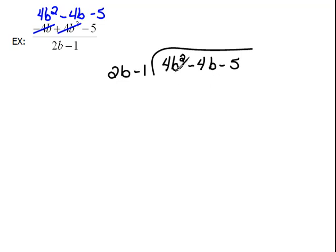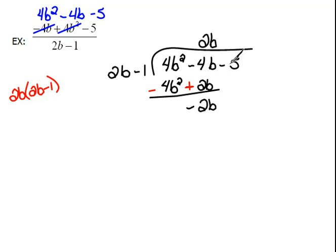2b times what gives you 4b squared? Well that would be 2b. Now if you need to come out to the side and say 2b times 2b minus 1, you certainly can. And that would be 4b squared minus 2b. Then we will change our signs and combine. So our 4b squared minus 4b squared cancels. Minus 4b plus 2b is a minus 2b. Now let's drop our next term and continue on.